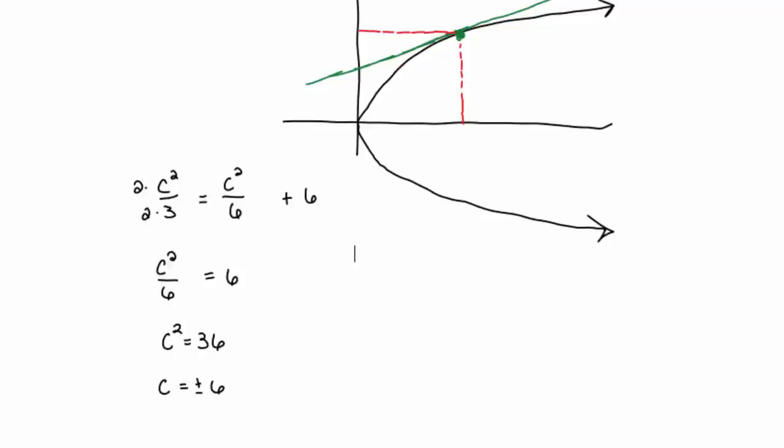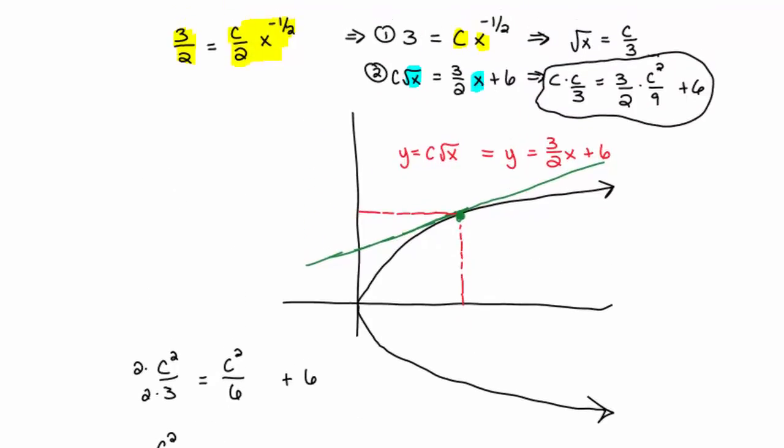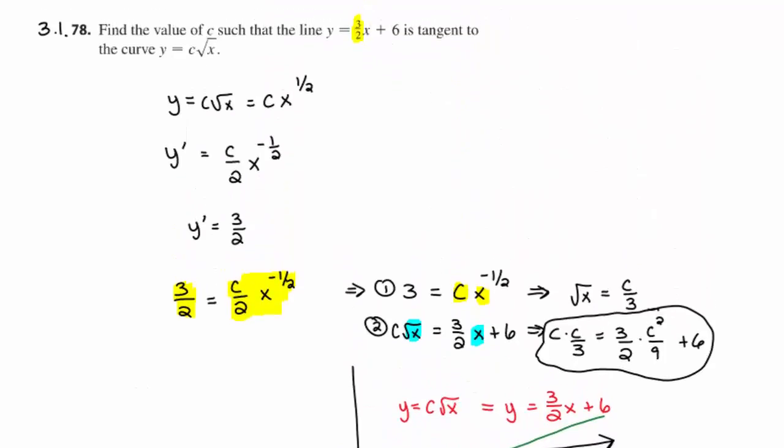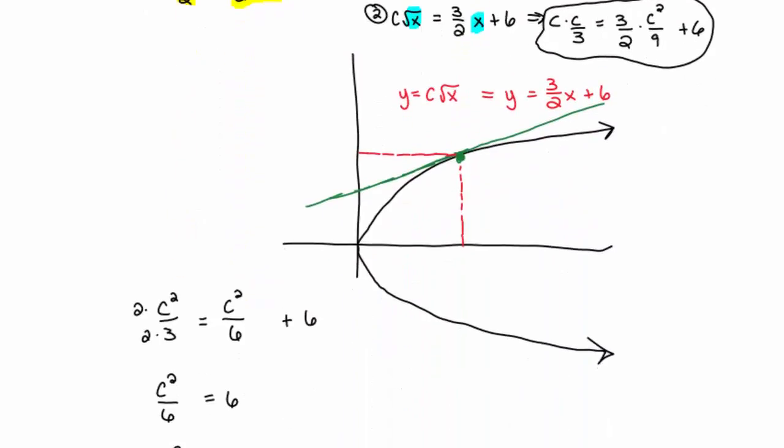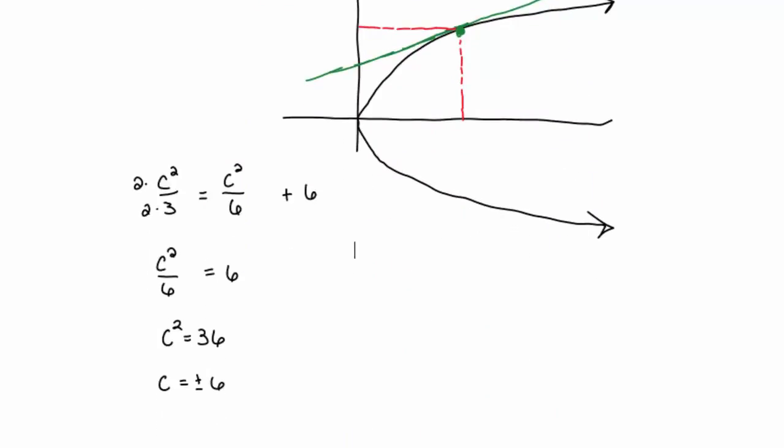Well, there's no way the line y equals two-thirds x, or I'm sorry, three-halves x plus 6. There's no way that line's going to hit that curve. So, I happen to know that negative 6 is not a possibility. It's only the positive 6. So, c equals positive 6 is the answer.